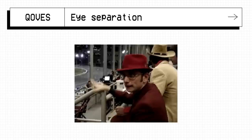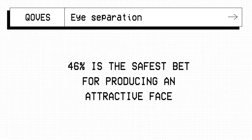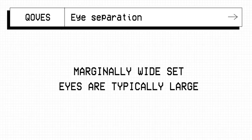That is not what the study is controlling for but much like betting on a horse, 46% is the safest bet for producing an attractive face, which is still attractive but the study doesn't control for eye sizes. Marginally wide set eyes are typically larger, like Anya Taylor-Joy who fits this 10% deviation.